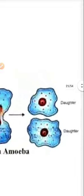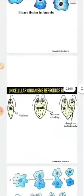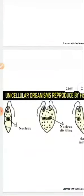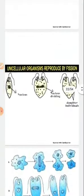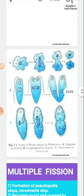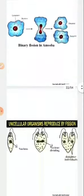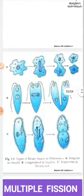Two daughter nuclei and two daughter cells — daughter amoebas — are formed. This is called simple binary fission. We also have longitudinal binary fission and transverse binary fission, as seen in Paramecium and Euglena.